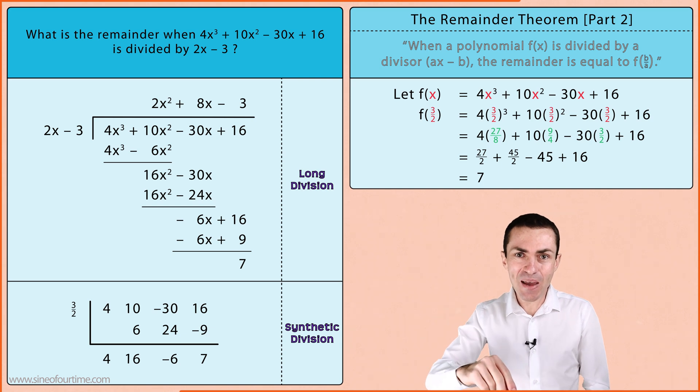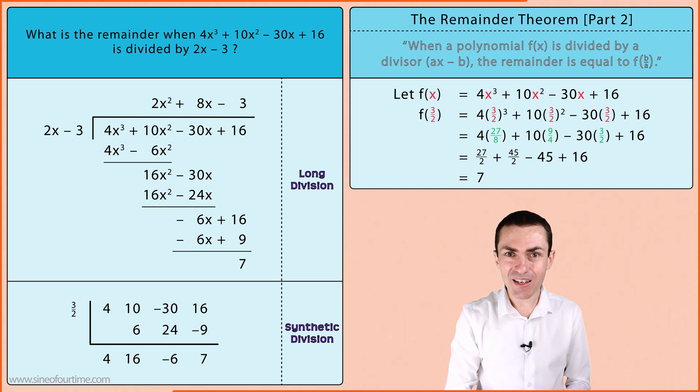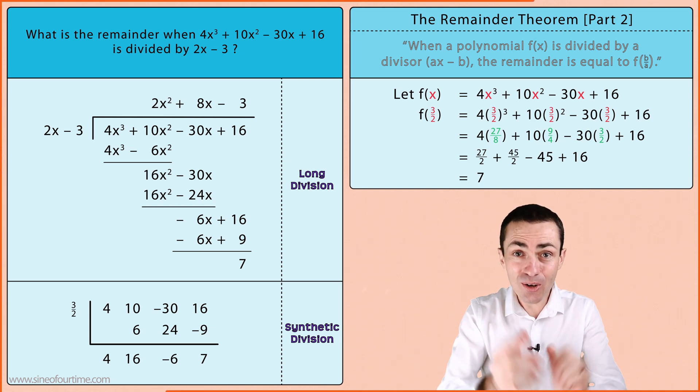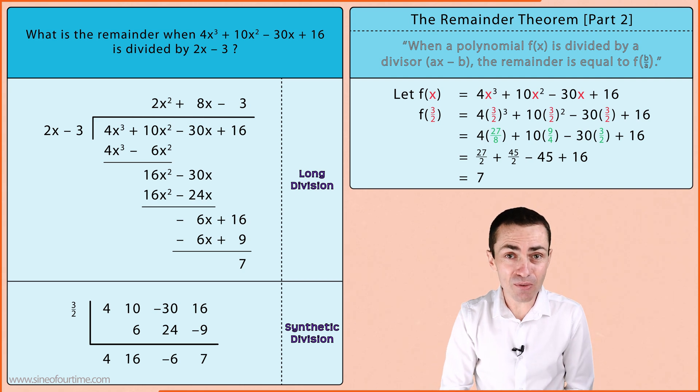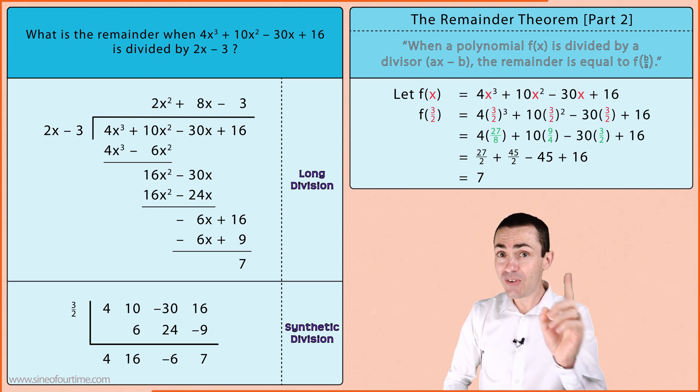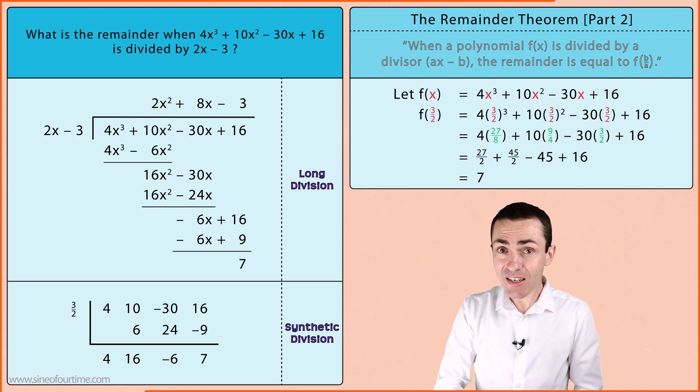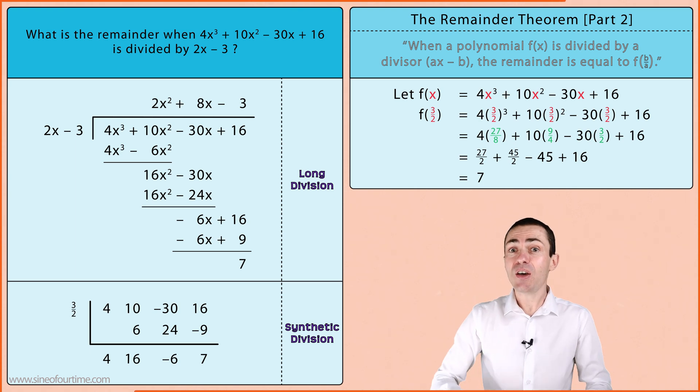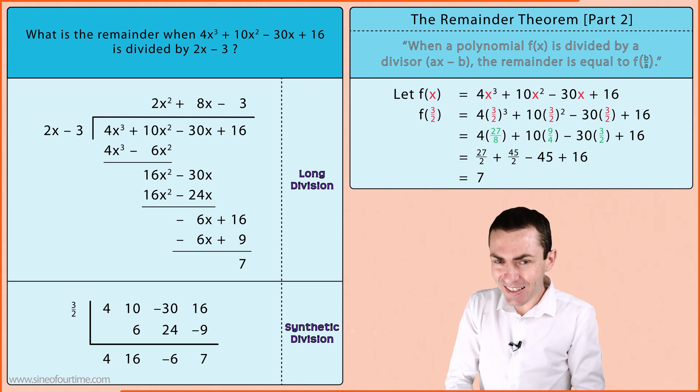And that's the remainder theorem in a nutshell. In conclusion if we are looking for the remainder of a polynomial division we simply find the value of x that makes the divisor equal to zero, and we substitute that value into the dividend in order for us to get the remainder in seconds.